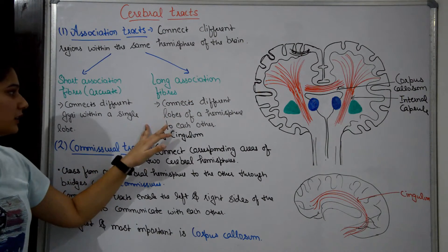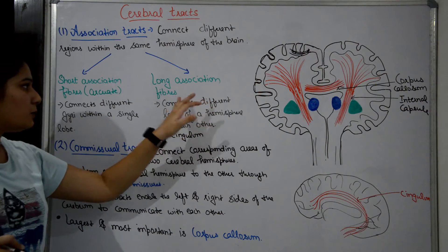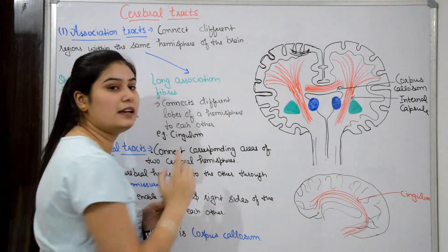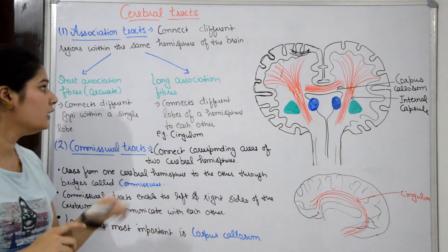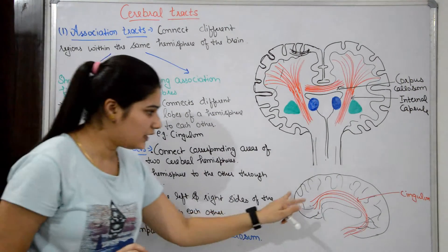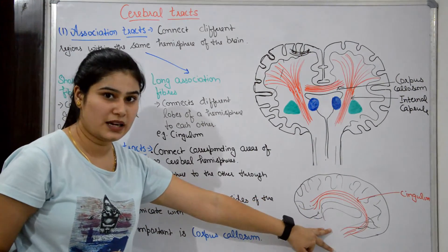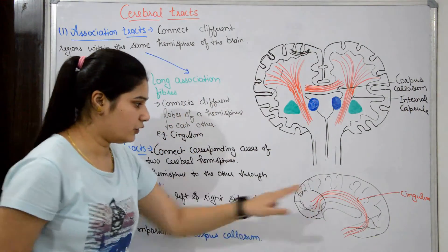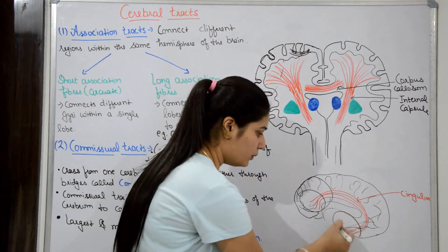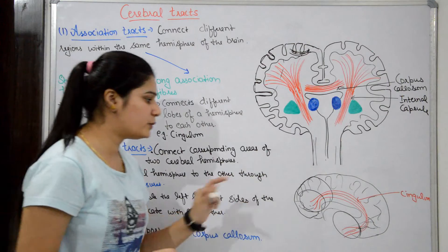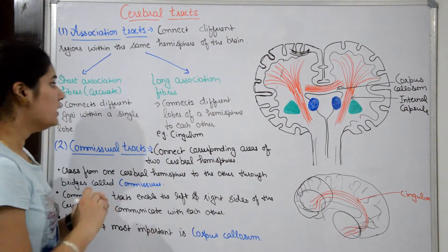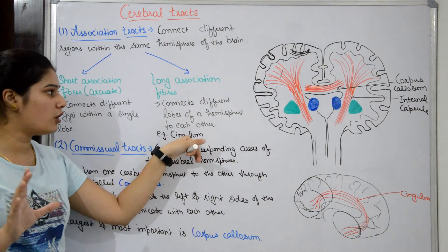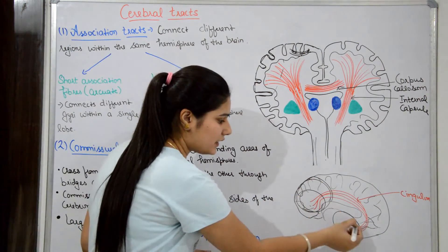Long association fibers connect different lobes of a hemisphere with each other. Because they are long, they connect two lobes — for example, the frontal lobe and the parietal lobe. Here is a medial view of the right cerebral hemisphere showing the frontal lobe, temporal lobe, and other lobes. An example of a long association fiber is the cingulum, which connects the frontal lobe to the temporal lobe.